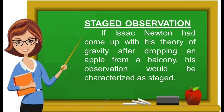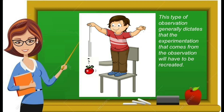If Isaac Newton had come up with his theory of gravity after dropping an apple from a balcony, his observation would be characterized as stage. Many experiments begin with a scientist thinking, 'What if?' — for example, 'What if I drop this apple from a balcony? What will happen?' In this form of observation, the scientist creates a hypothetical theory from thinking about something in nature, intervening in nature, or observing the event. This type of observation generally dictates that the experimentation that comes from the observation will have to be recreated.